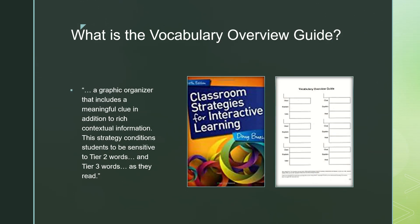So what is the vocabulary overview guide? I learned about this in our textbook, Classroom Strategies for Interactive Learning, and essentially it is a graphic organizer that includes a meaningful clue in addition to rich contextual information. This strategy conditions students to be sensitive to Tier 2 words and Tier 3 words as they read.